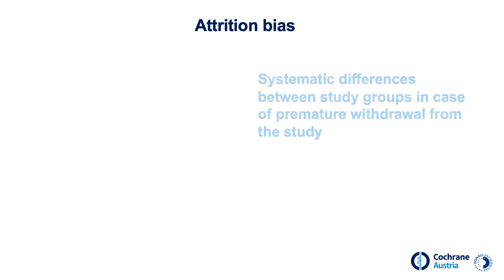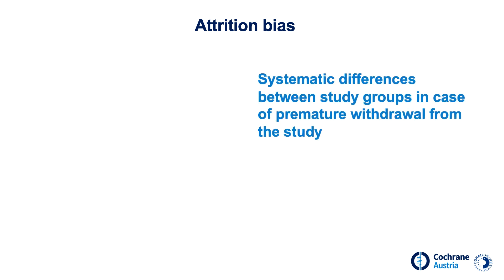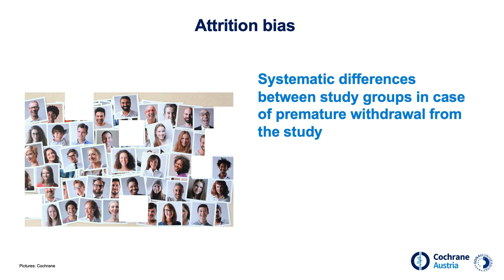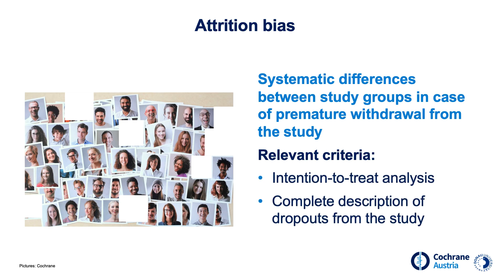With attrition bias, premature exit from the study results in systematic differences between study groups. In general, it is normal for some people to leave studies early; however, it becomes problematic if this happens systematically and not accidentally. Suppose those who feel particularly unpleasant or have many side effects leave the study — if at the end we only analyze those who remained until the very end, we would erroneously believe there were very few side effects. One can minimize attrition bias by providing an intention-to-treat analysis that includes all individuals originally randomized to a study.